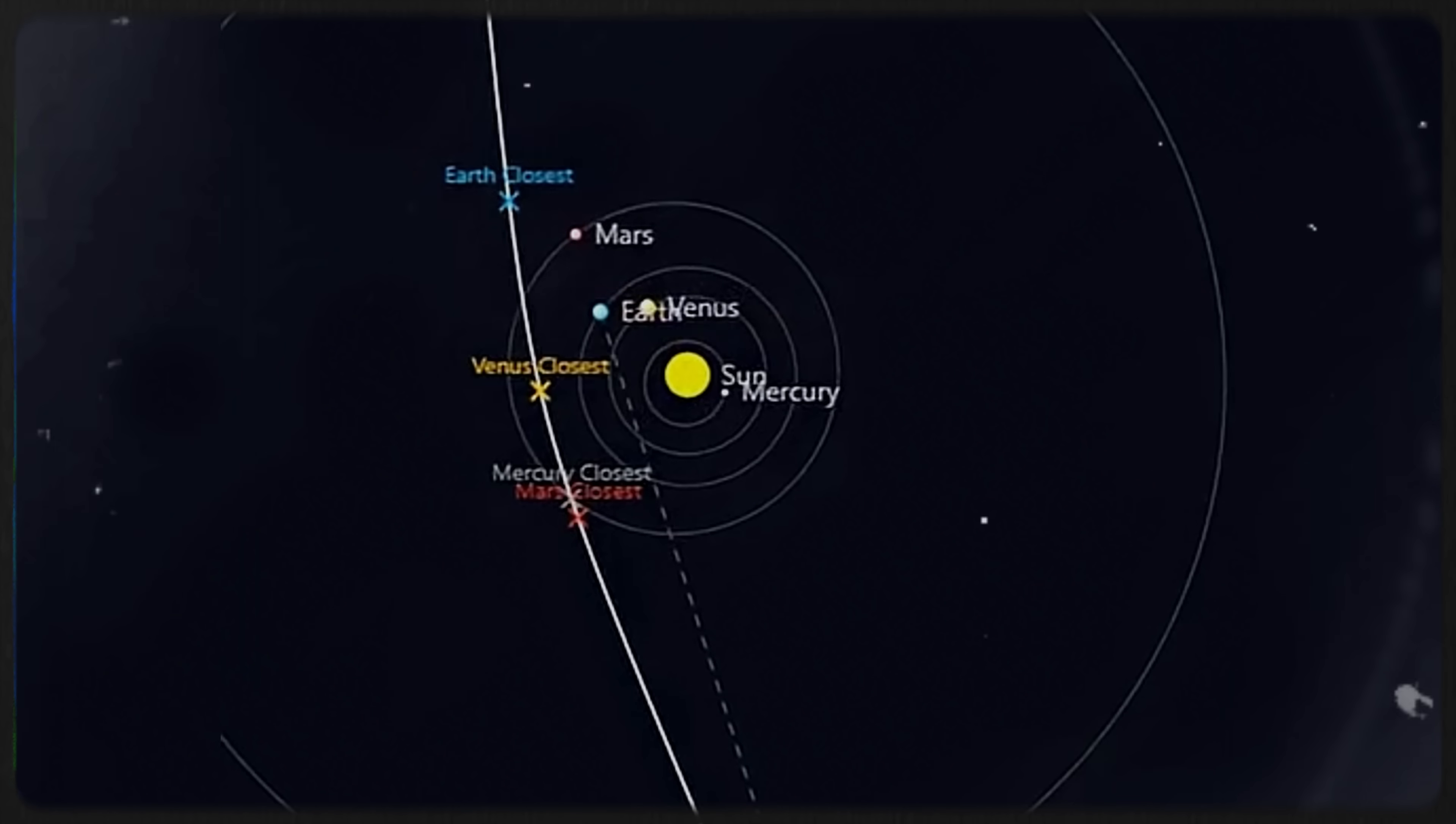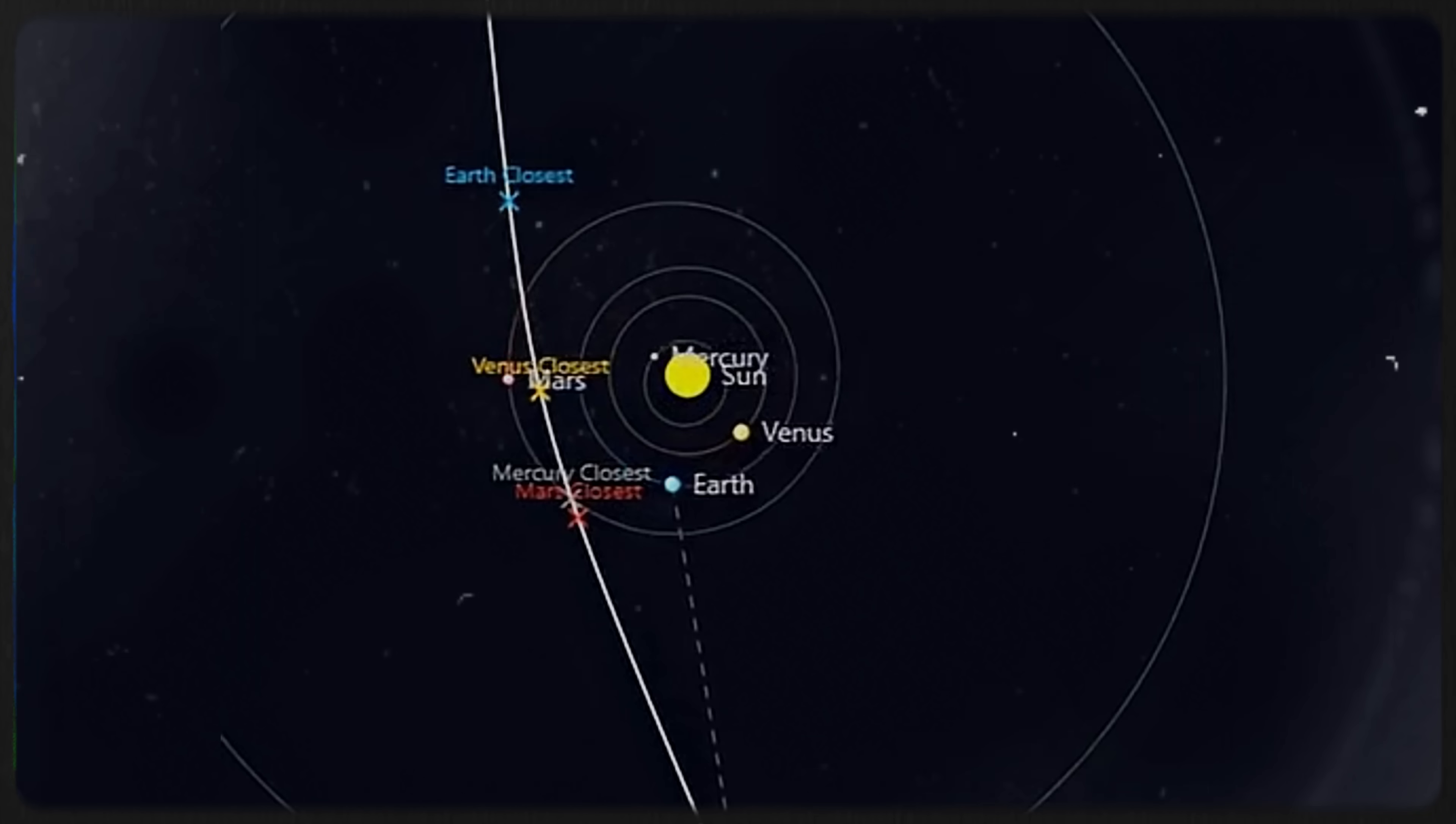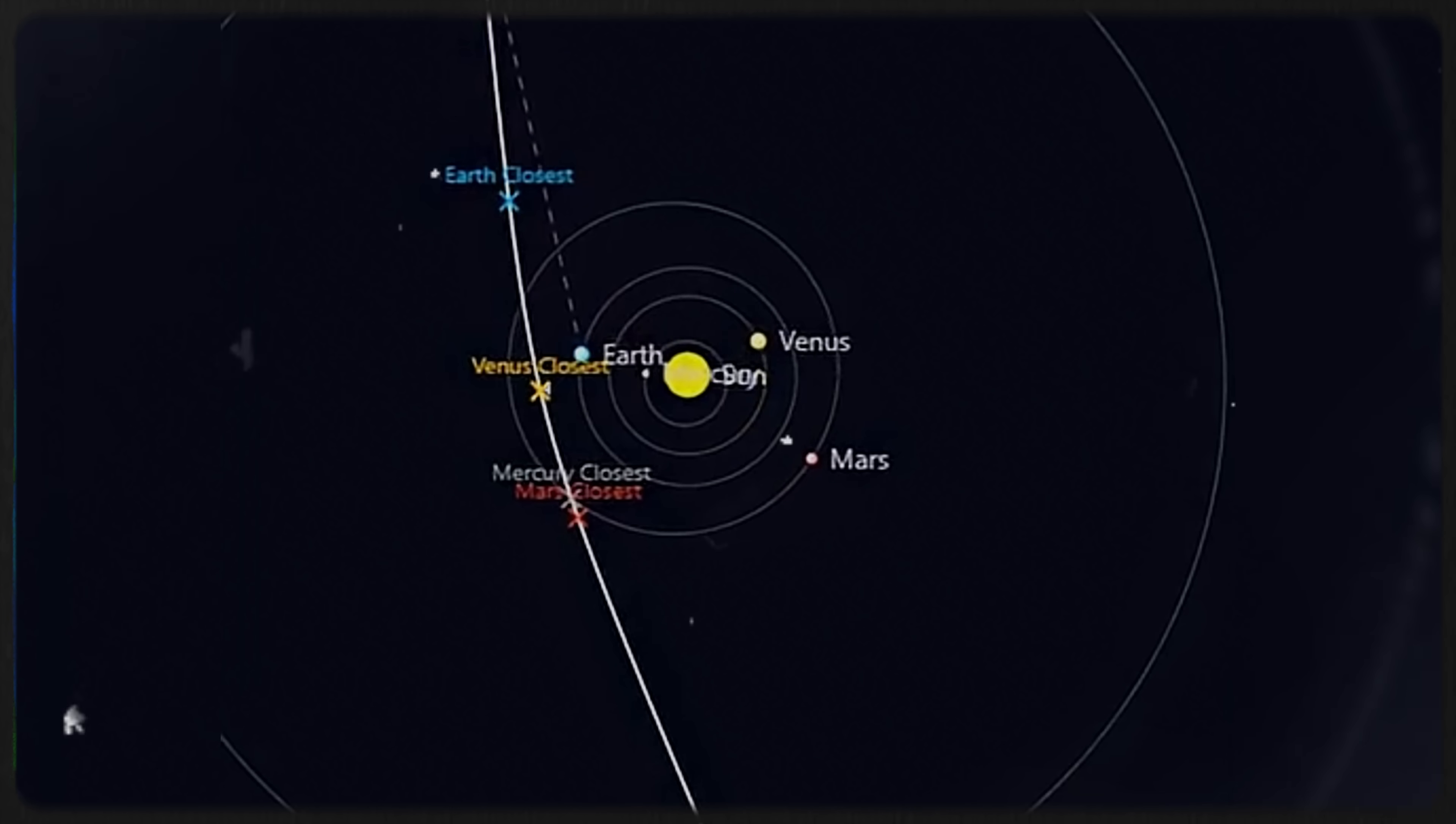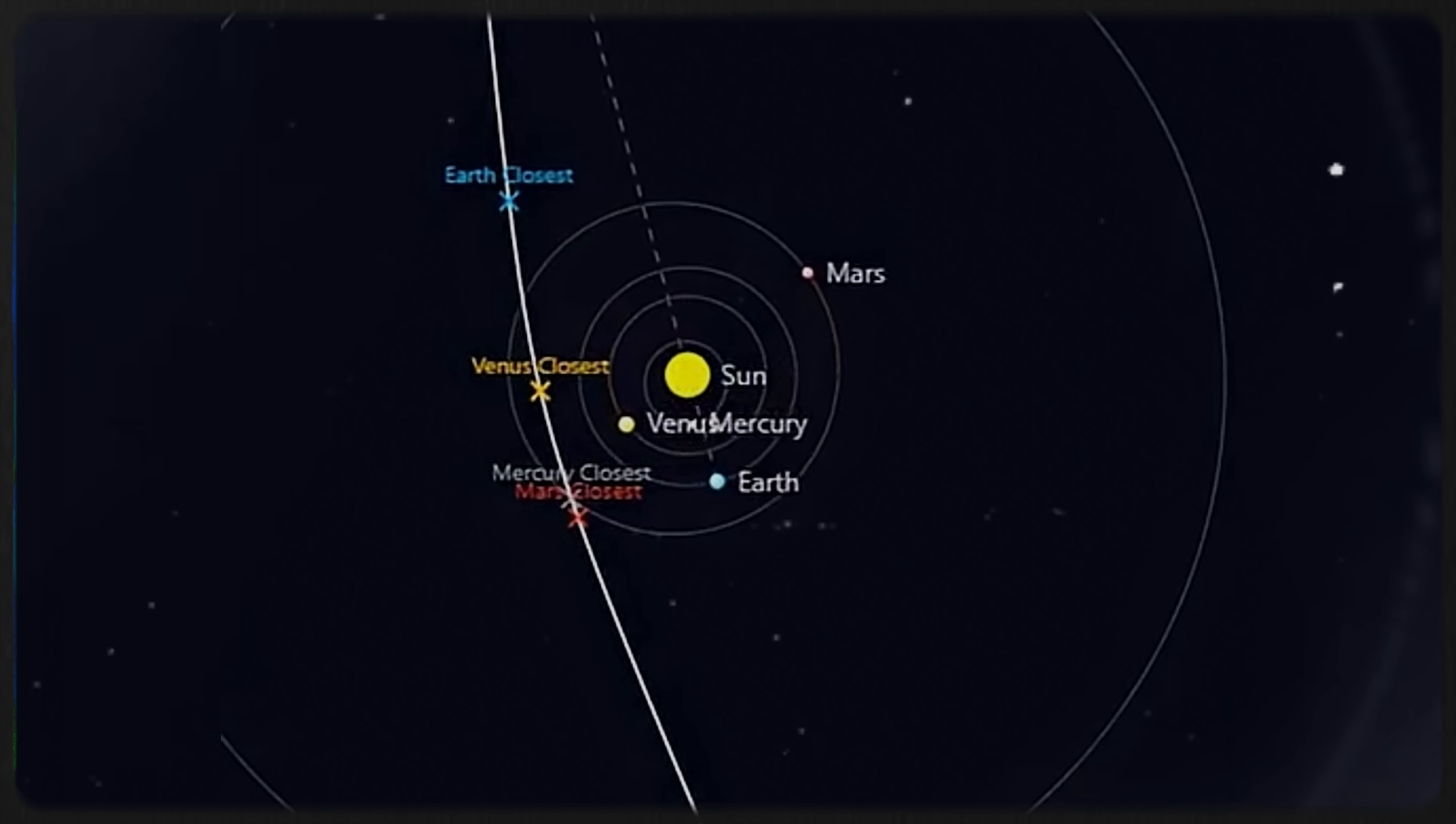Was 3i Atlas speeding up, slowing down, or drifting in ways no natural comet should? Or, as a recent paper led by Harvard astronomer Avi Loeb has suggested, was its remarkable steadiness itself the anomaly, a trajectory so stable that it hints at control rather than chance?